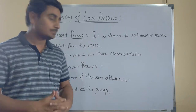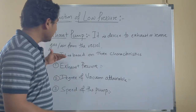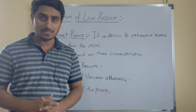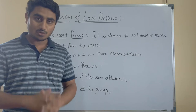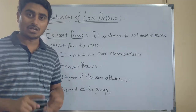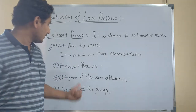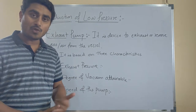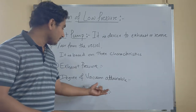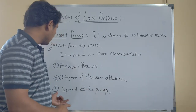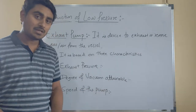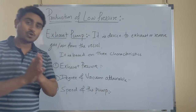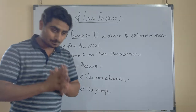The exhaust pump is based on three characteristics: the first is the exhaust pressure, the second is the degree of vacuum attainable, and the third is the speed of the pump. Let us first discuss exhaust pressure.